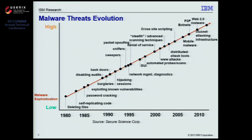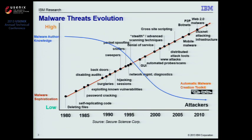Despite the dramatic increase in malware complexity, the required knowledge for creating malware actually decreased substantially. This is mainly due to the growing popularity of various automatic malware creation toolkits such as Zeus or SpyEye, which allow even less skilled attackers to automatically customize their own malicious code, leading to the massive creation of malware programs.